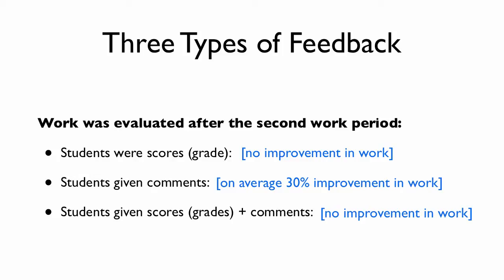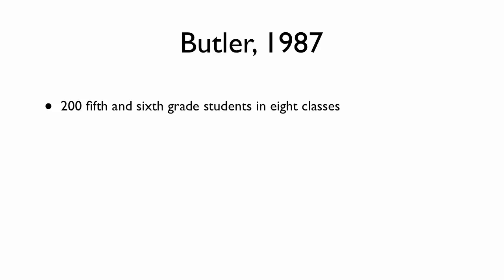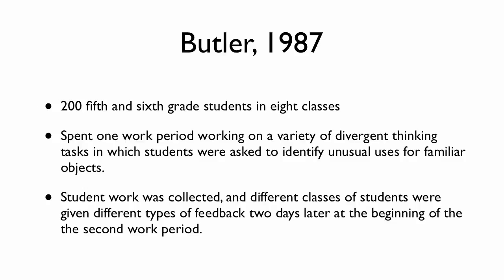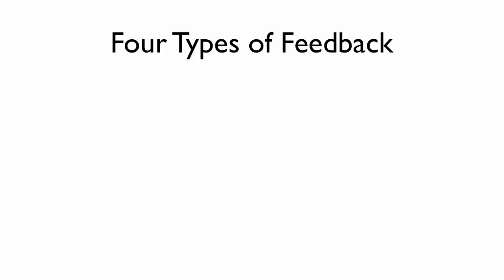The next study, conducted by Butler in 1987, looks at 200 fifth and sixth grade students in eight different classes. It was set up similarly: one work period was spent working on divergent thinking tasks, the work was collected, and students were given feedback at the beginning of the second work period. That work was then collected and evaluated to see what type of feedback improved student work.